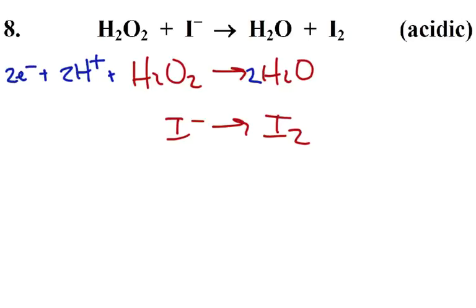For the bottom half-reaction, we balance the atoms and see that we're going to need two iodines to balance, and that's all the atoms. Charge: which side is more positive? It's more positive on the right, more positive by two, so we add two electrons. In this case, the electrons cancel out easily. So if somebody asks, the value of N equals two.